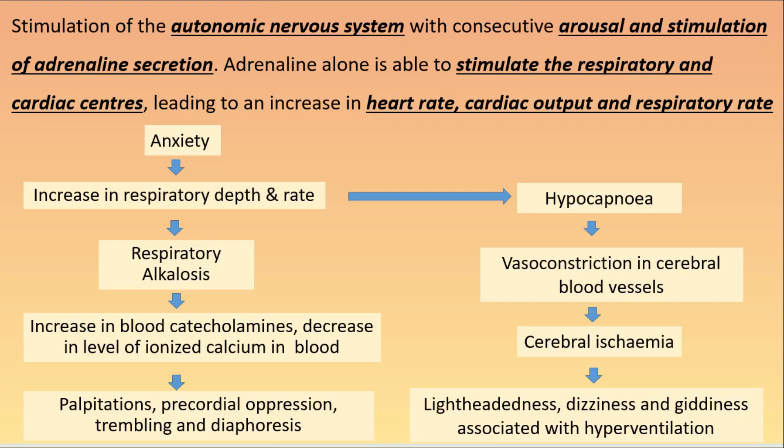Coming to pathophysiology — what happens in hyperventilation? There is stimulation of the autonomic nervous system, which leads to increased adrenaline secretion, which in turn stimulates the respiratory and cardiac centers, leading to an increase in heart rate, cardiac output, and respiratory rate.